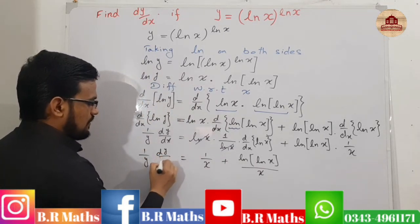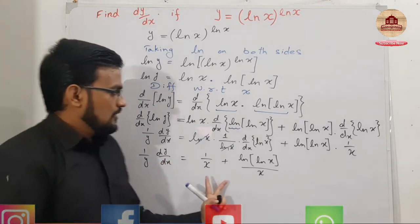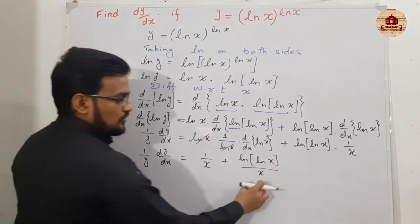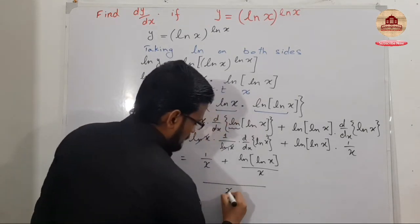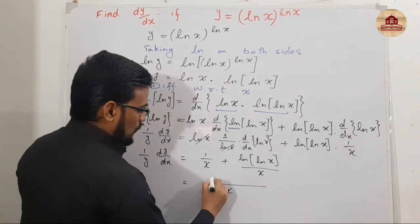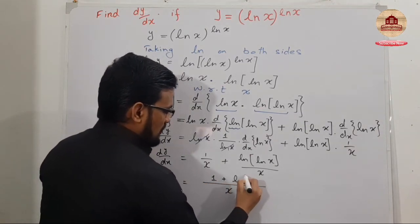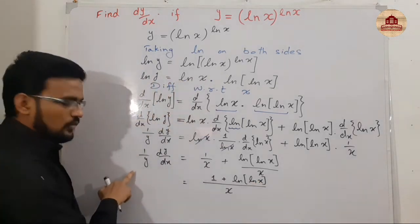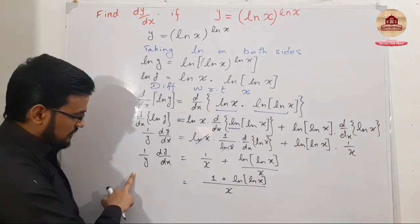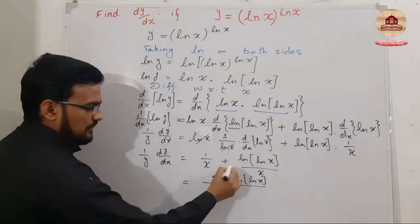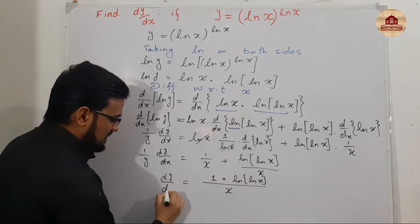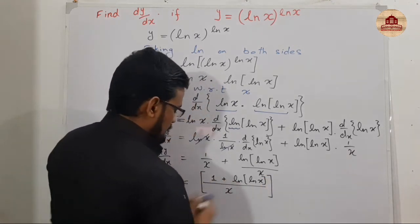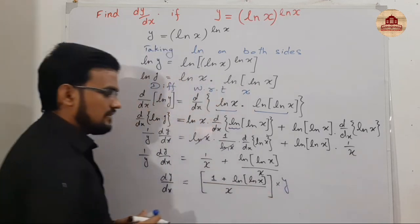Students, you can see: 1/x plus ln(ln(x)) over x. Take the LCM, which is x, giving 1 plus natural log of natural log of x. Here, the 1/y on the left — when it moves from left to right it becomes a multiplier, so dy/dx is multiplied by y.